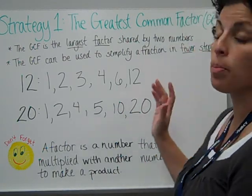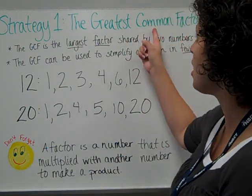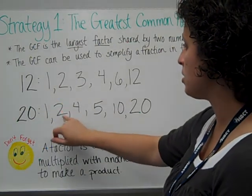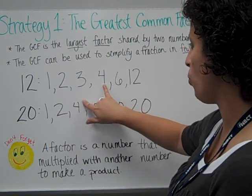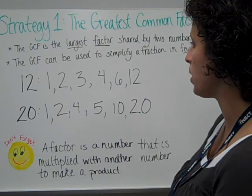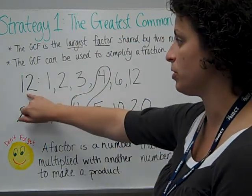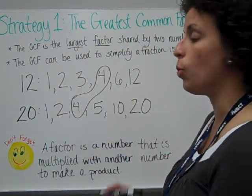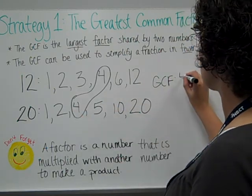So now that I have both list of factors, I'm looking for the greatest common, that means shared, factor. They share 1's, they share 2's, they share 4's, not 5, not 6, not 10, 12, or 20. So the largest factor that they both have, they being the 12 and the 20, the largest factor that they both have is 4. So the greatest common factor of 12 and 20 is 4.